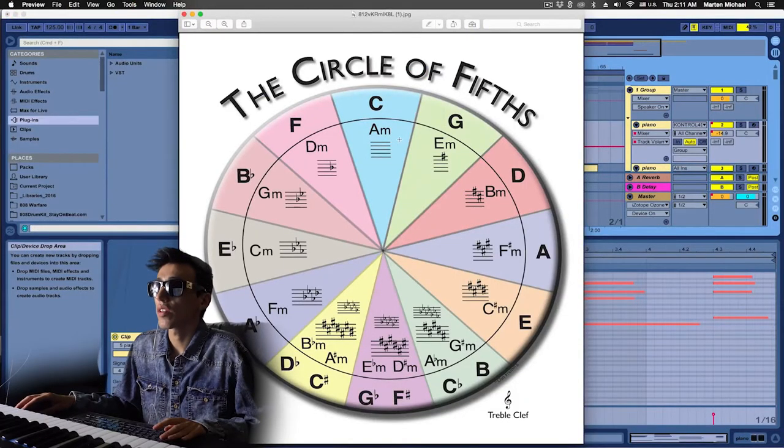The Circle of Fifths is a diagram and a tool that shows all the major chords and the corresponding minor chords and the relationship of those chords and which ones work together in which key. So I'm going to write a four bar chord progression today using the Circle of Fifths and show you guys how you can use that Circle of Fifths to create your own badass chord progressions. Let's go ahead and take a look at the Circle of Fifths.